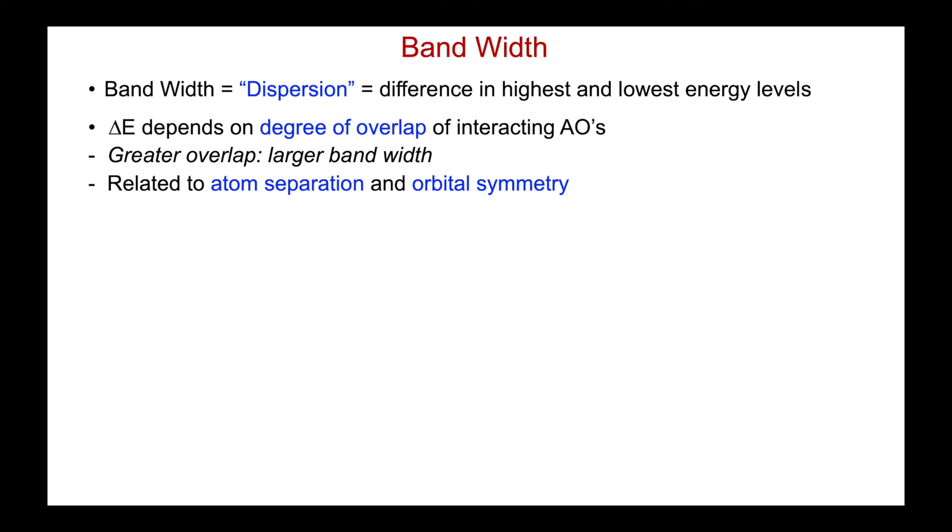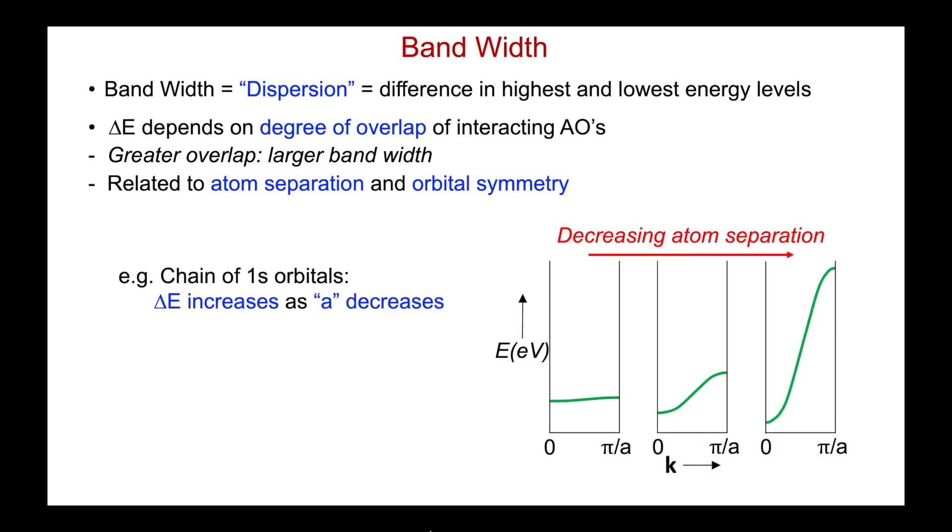If there's greater overlap, there'll be a larger band width. And specifically, this is related then to the atom-atom separation, as well as the orbital symmetry. And as the atom-atom separation decreases, going from left to right, then I have more and more overlap between the interacting atomic orbitals. And so, therefore, my all-bonding level becomes increasingly stabilized, and my all-anti-bonding orbital becomes increasingly destabilized. So the energy difference between the two, ΔE, from here to here, increases. And so going from left to right, what I'm actually doing is reducing my atom-atom separation, my a.